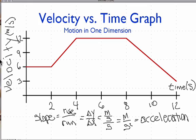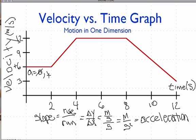On the velocity versus time graph, the slope equals the acceleration — unlike the position versus time graph where slope was velocity. Looking at section one: the line has no slope, therefore zero acceleration. All the velocities are a constant positive six meters per second, so we're always going in the positive direction with constant velocity because there's no acceleration.